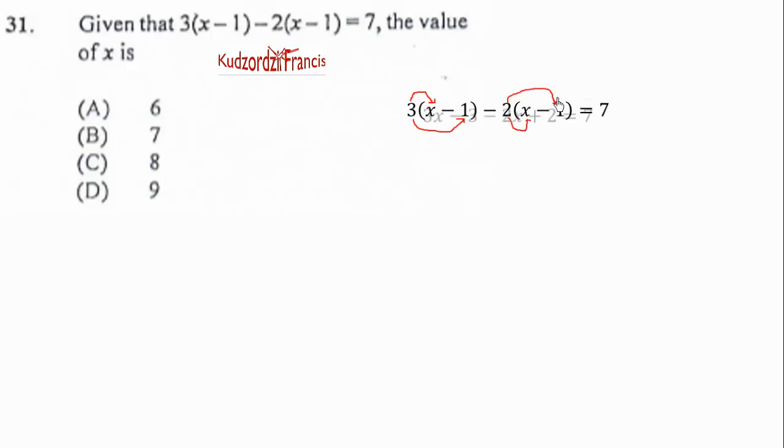So let's do that to get 3x - 3 - 2x + 2. Note that negative times negative gives us positive. So that will be equal to 7.